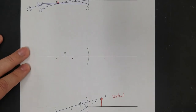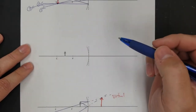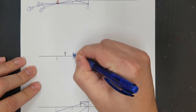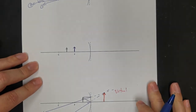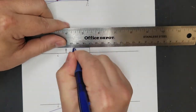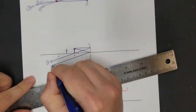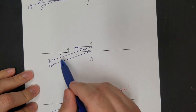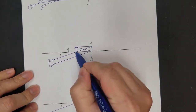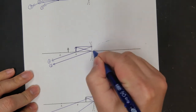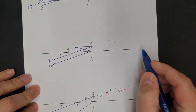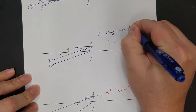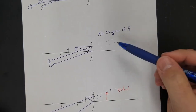When we did a converging lens and were right on the focal point, there was no image. Let's see if that works with a mirror. I'm going to put an arrow right on the focal point and draw the ray diagram. In this case I couldn't draw ray two at all. Just like with a lens, if you're sitting right on the focal point, these two rays are parallel — they never cross, so you get no image. This is true for both converging mirrors and converging lenses.